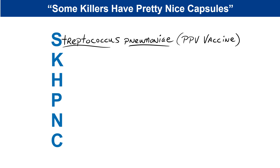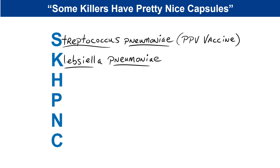The K is for Klebsiella pneumoniae — yet another cause of dangerous fluid buildup in the lungs. This is different because Streptococcus pneumoniae is a gram-positive coccus chained in strings, while Klebsiella are gram-negative rod-shaped bacteria. There is no vaccine for Klebsiella pneumoniae, and many strains have been the cause of death in recent years due to notorious antibiotic resistance.